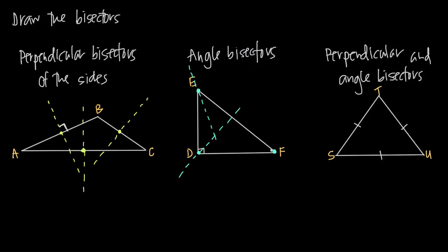For angle F, we draw the line that divides that angle into two equal angles. The reason we need to know this is because later on we're going to do different things with the point where all of the angle bisectors meet — the point in the interior of the triangle where each of the three angle bisector lines intersect each other. This is an important point in geometry.